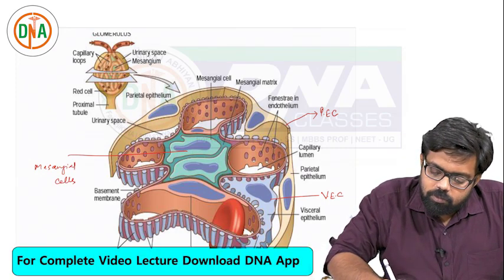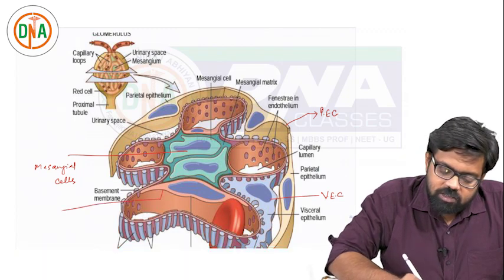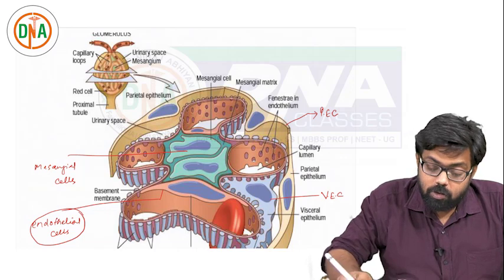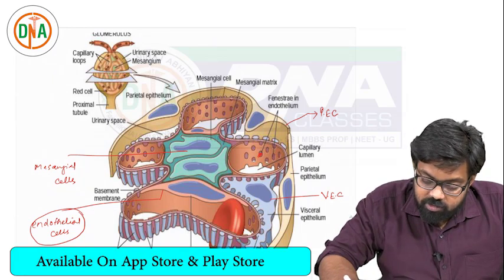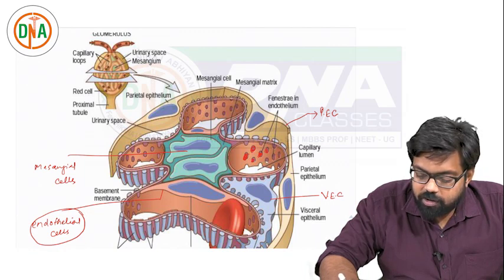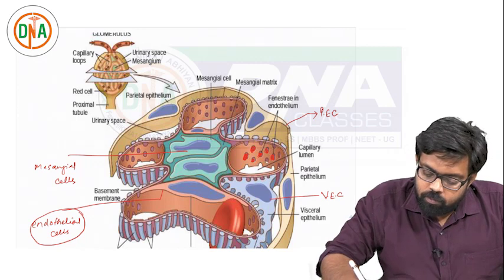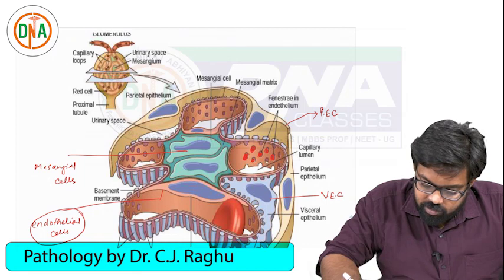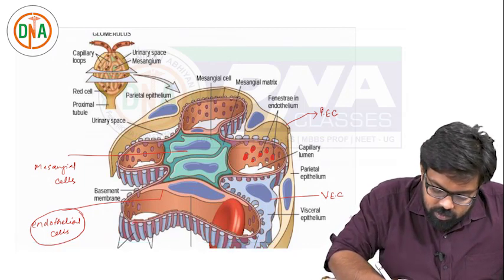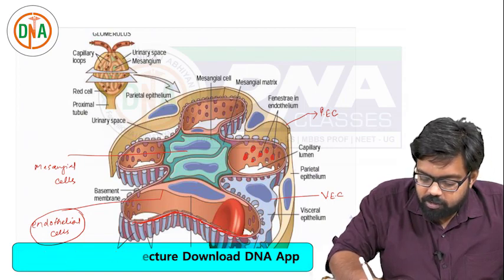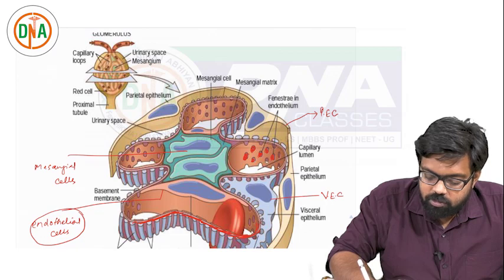These orange colored cells are nothing but the endothelial cells - the fenestrated endothelium. You can also appreciate the fenestrations here. The size of the fenestration is almost 70 to 100 nanometers. And in between, there is a maroon colored linear structure - this is nothing but the glomerular basement membrane. So this is all about the structure of the glomerulus.